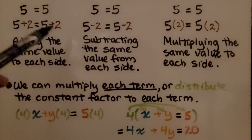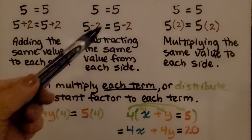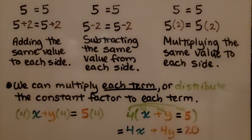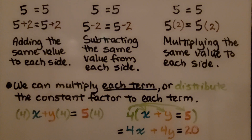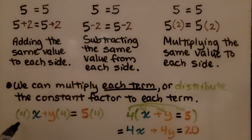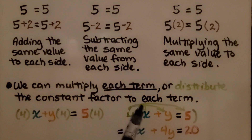Adding the same value to each side of the equal sign will get the same sum, and subtracting the same value from each side will get the same difference, and multiplying the same value to each side will get the same product. We can multiply each term, or distribute the constant factor to each term. For example, if we have x plus y is equal to 5, we can multiply each term by 4 to get 4x plus 4y is equal to 20.